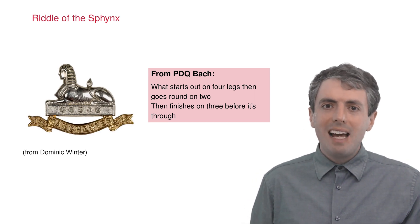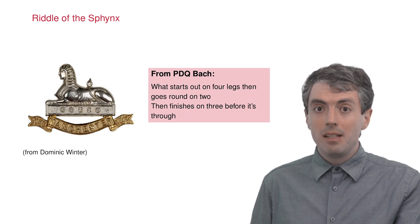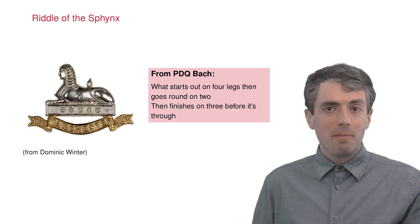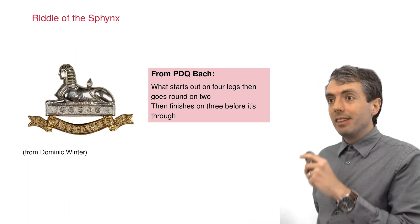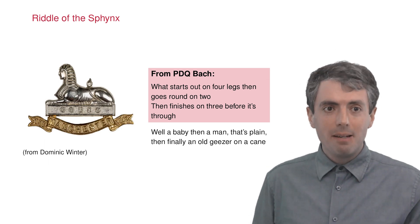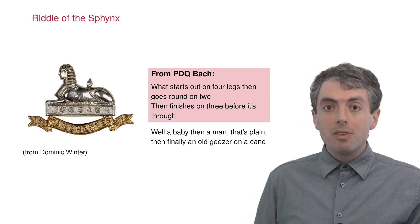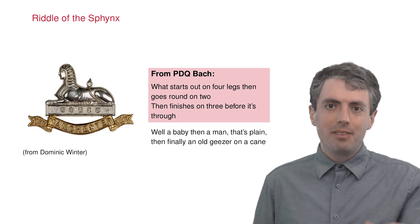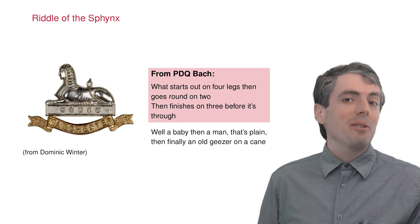In Greek myth, the Sphinx asks questions to anyone who tried to enter the city of Thebes — a riddle. Here's PDQ Bach's interpretation: 'What starts out on four legs, then goes round on two, then finishes on three before it's through?' And the answer: a baby, then a man — that's plain — then finally an old geezer on his cane.